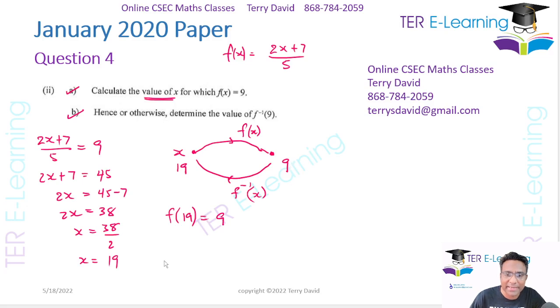Now, if I take that 9 and I plug it into the inverse, so f inverse of 9, I should get 19. So they said hence or otherwise. So you didn't have to go and work out the inverse, you can deduce what the answer should be. So f inverse of 9 should be 19. That's it.